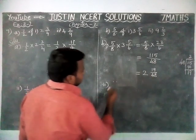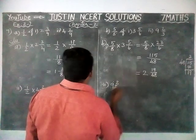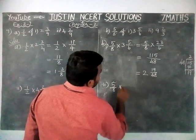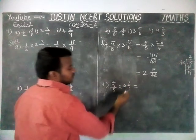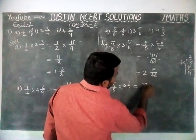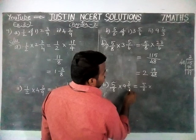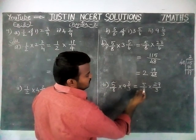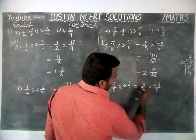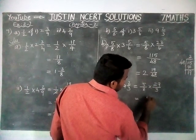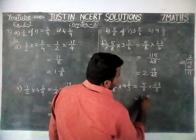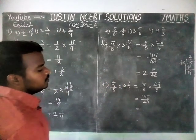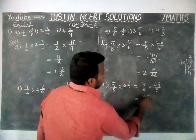Next, Roman numeral 2: 5/8 of 9 2/3. We have to convert this mixed fraction into improper fraction. 5/8 into — 9 threes are 27, and 27 plus 2 is equal to 29 — divided by 3. If it is possible to simplify we can simplify, but here we cannot simplify, so we are multiplying. 5 nines are 45, remaining 4; 5 twos are 10, and 10 plus 4 is equal to 14. Now 8 threes are 24. So we get 145 divided by 24.